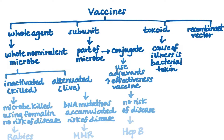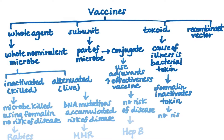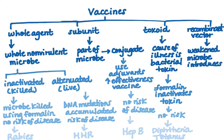Toxoid vaccines are used specifically when the cause of illness is a bacterial toxin — hence the name. Formalin is used to inactivate the toxin, and again there is no risk of contracting the disease. The two most common examples are your diphtheria and tetanus toxoid shots.